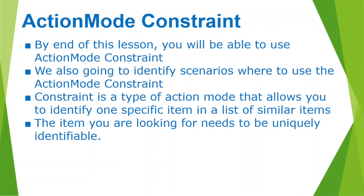Constraint is a type of action mode that allows you to identify one specific item in a list of similar items. The item you are looking for needs to be uniquely identifiable. To make it uniquely identifiable within similar items, we use an action mode called constraint. Now let's jump onto the system and see how, when, and why we need to use the action mode constraint using Tricentis Tosca.